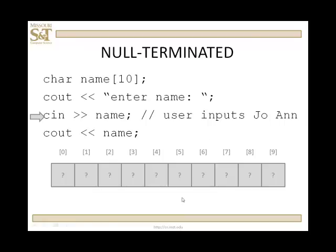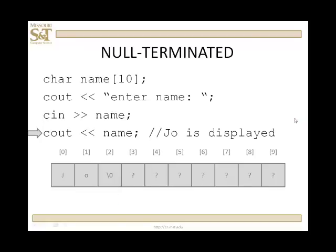However, if we want to input a name like 'Joann', the C++ compiler will only read up to the first white space. White space includes spaces, the tab character, and the newline character, which goes onto the stream when you hit enter. So the only data entered is 'Jo' — the 'ann' is going to be left out there in the stream, which can cause you some headaches. Then when you try to output it, you only get 'Jo', not 'Joann'.